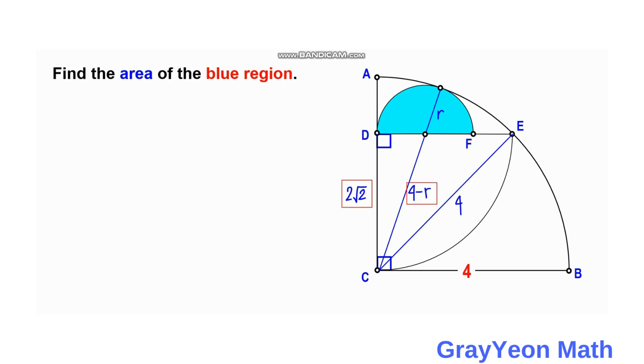Let us label the remaining unknown points. So let's call this center G and this point of tangency as H. We also notice that DG is also r, so we can actually see a right triangle here, DGC.